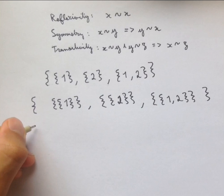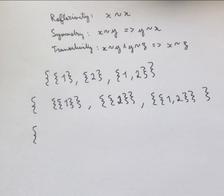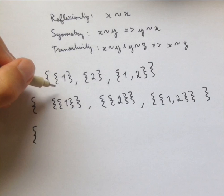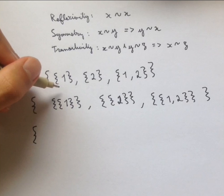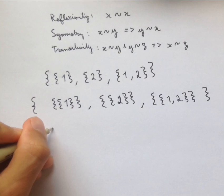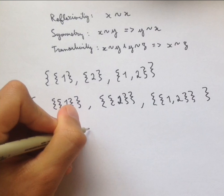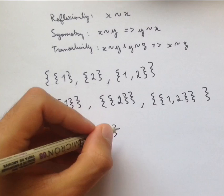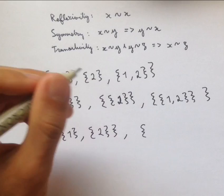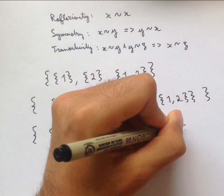Now let's see what we get when we use equinumerous as our equivalence relation. We look at the element {1} and find all things equinumerous to singleton {1}. Singleton {1} has one element, and singleton {2} also has one element, so these two are equivalent. But the doubleton {1,2} is not a set with one element, so it doesn't get in the group. We get a class containing singleton {1} and singleton {2}. Singleton {2} is already accounted for, so we skip it. Finally, the doubleton {1,2} is the only set with two elements, so it is alone in its own class.